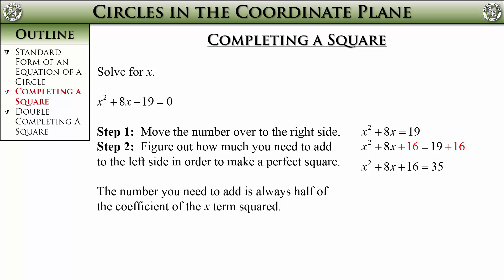Once you add the 16 to both sides, we clearly should simplify the right side, in this case to 35. From here, it is step 3. You need to factor the left side. If you did step 2 properly, it should be a perfect square.